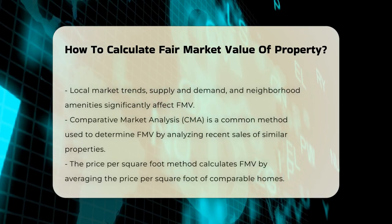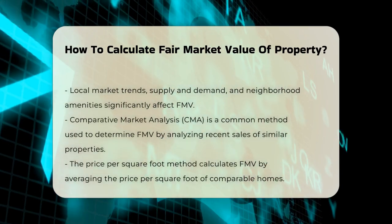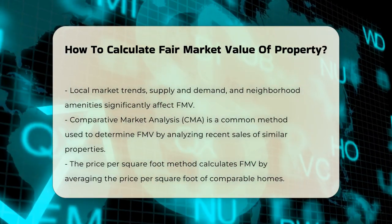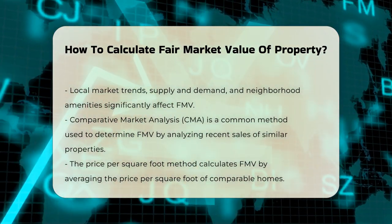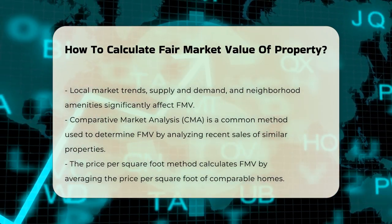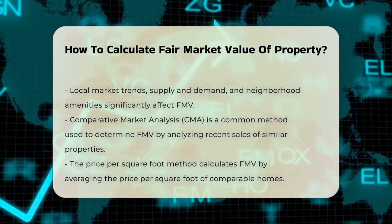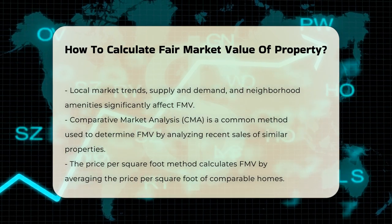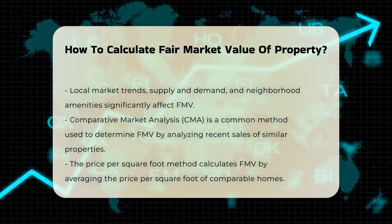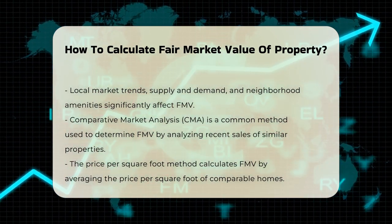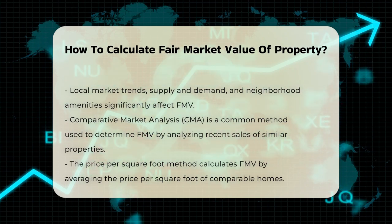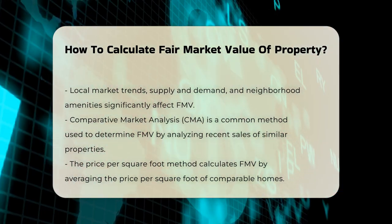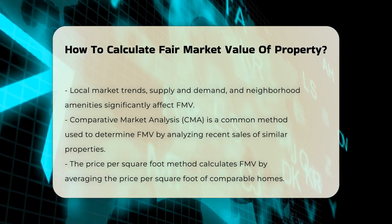Methods of calculation. There is no strict formula for calculating FMV, but several methods are commonly used. Comparative Market Analysis, CMA, involves analyzing the prices of recently sold properties in the same area that are similar in size, age, and other relevant features. Real estate agents often use this method to determine a fair price for a property.